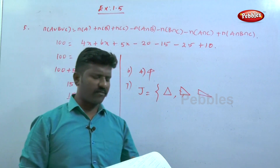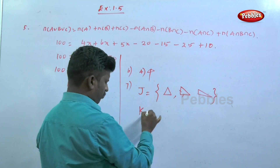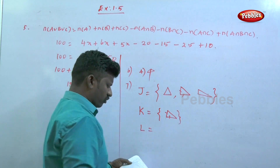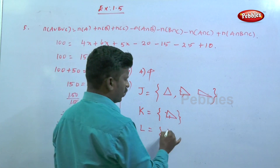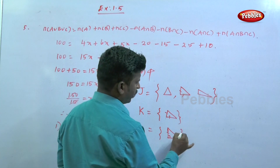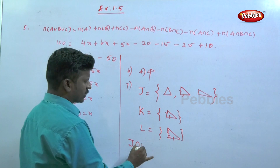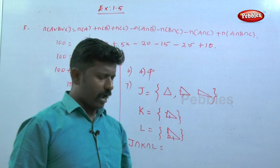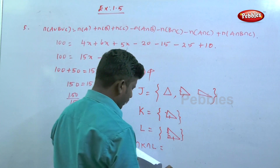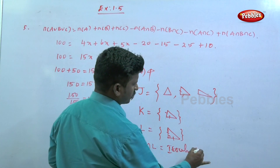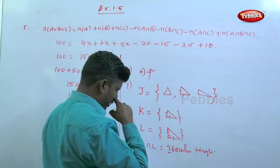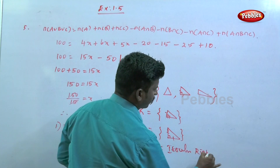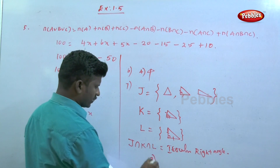Question seven: J equals the set of three-sided shapes (triangles). K equals the set of shapes with two equal sides. L equals the set of shapes with a right angle. The intersection J∩K∩L means three-sided shapes with two equal sides and a right angle — that is an isosceles right triangle. Option three is correct.